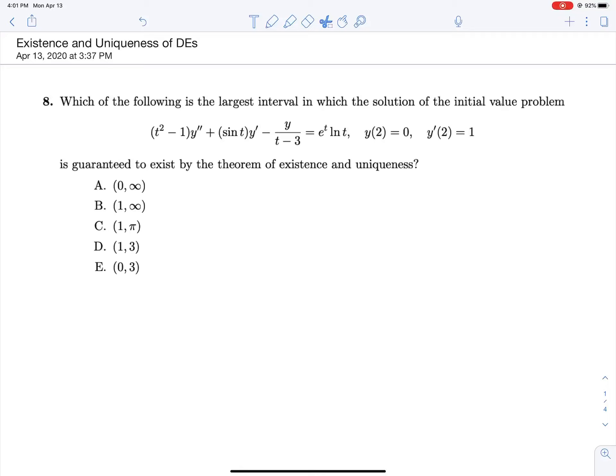So we know that if we have an equation in the form where the highest derivative has a coefficient of one, let's quickly rearrange that. We have y double prime plus sine t over t squared minus 1 y prime minus y over t squared minus 1 t minus 3 equals e to the t ln t all over t squared minus 1.